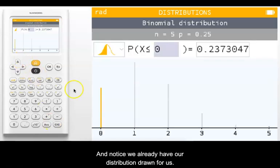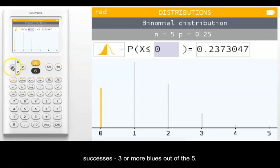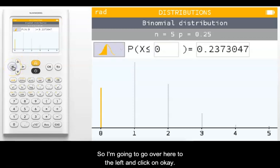And notice we already have our distribution drawn for us. This is actually showing the probability of getting zero or fewer successes in the five trials. I want to know the probability of getting three or more successes, three or more blues, out of the five.